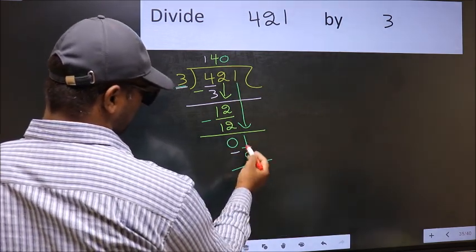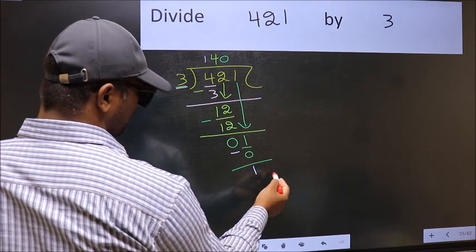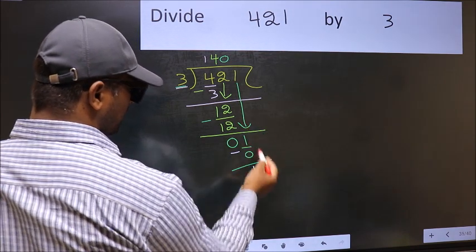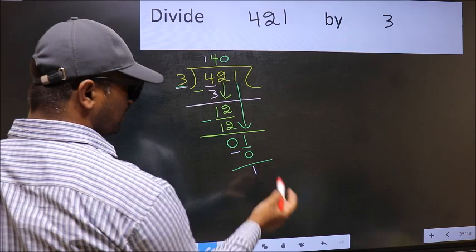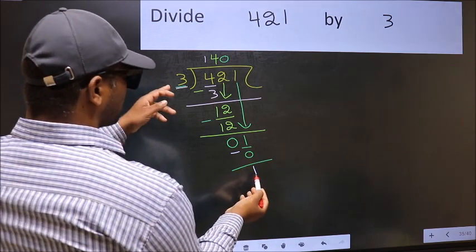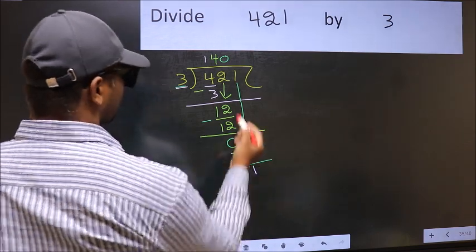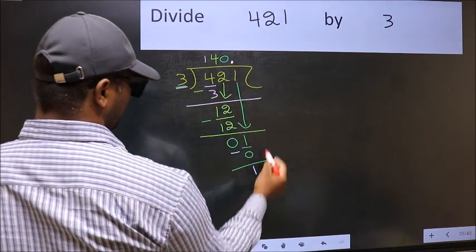Now you subtract. 1 minus 0, 1. Over here, we did not bring any number down, and 1 is smaller than 3. So now we can put a dot and take 0.